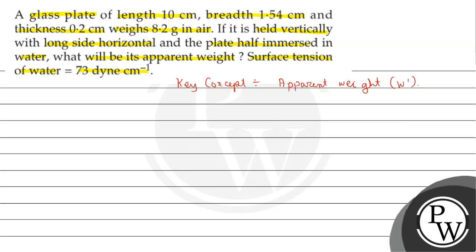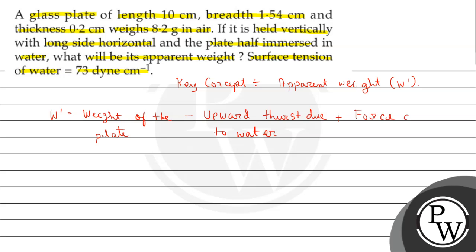The apparent weight is denoted by W dash. The formula for apparent weight is: W dash equals the weight of the plate minus the upward thrust due to water, plus the force due to surface tension.